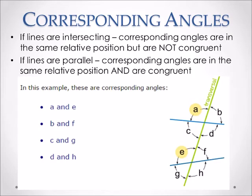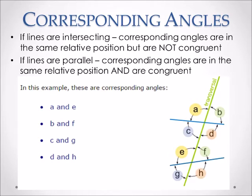Here we have an example where the lines are intersecting, therefore not parallel. So A and E are corresponding angles, but here they will not be congruent. B and F are also corresponding angles, as well as C and G, and D and H.